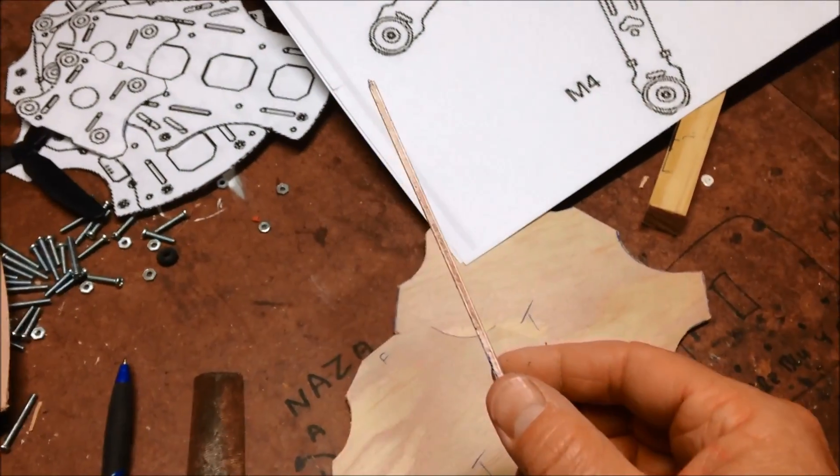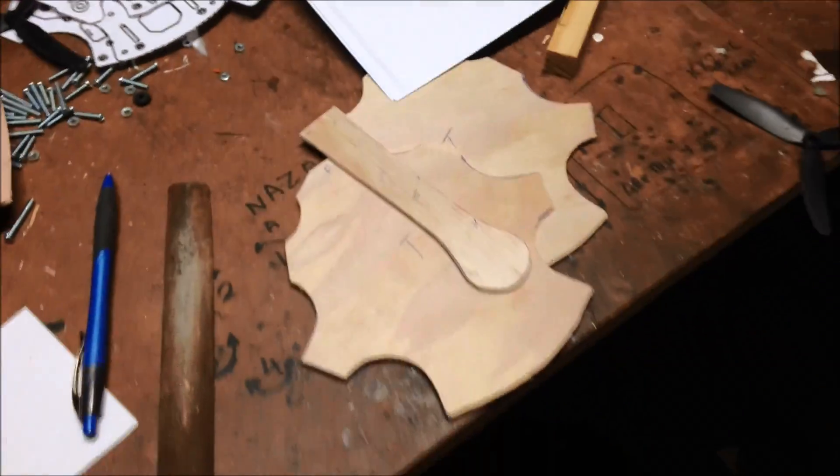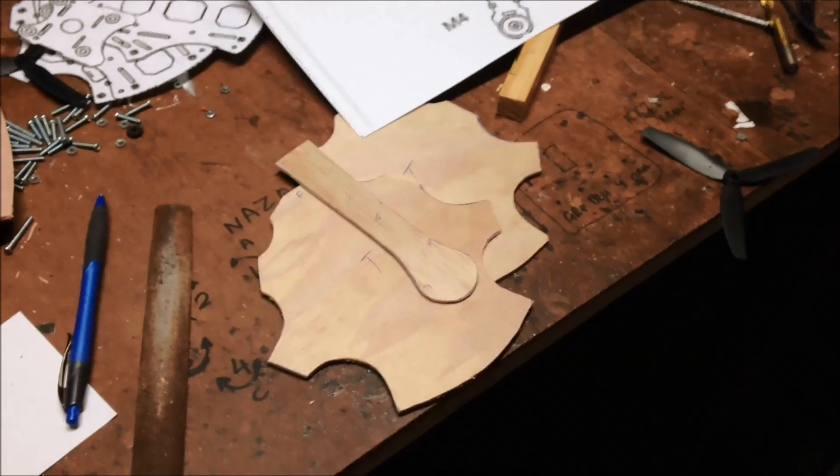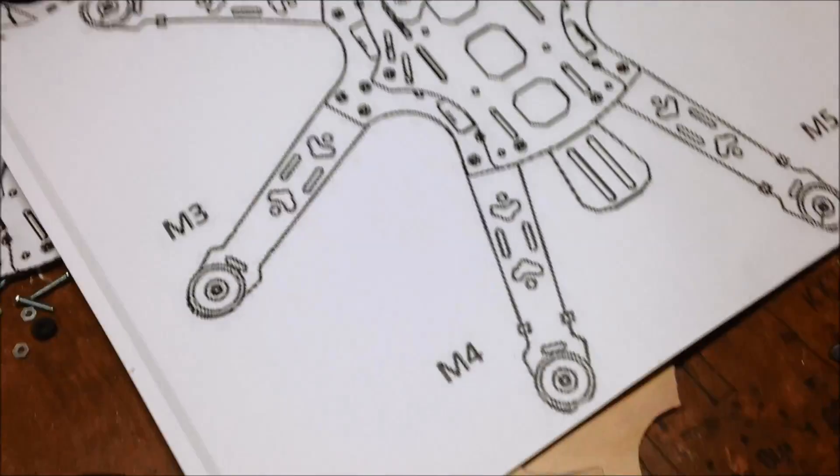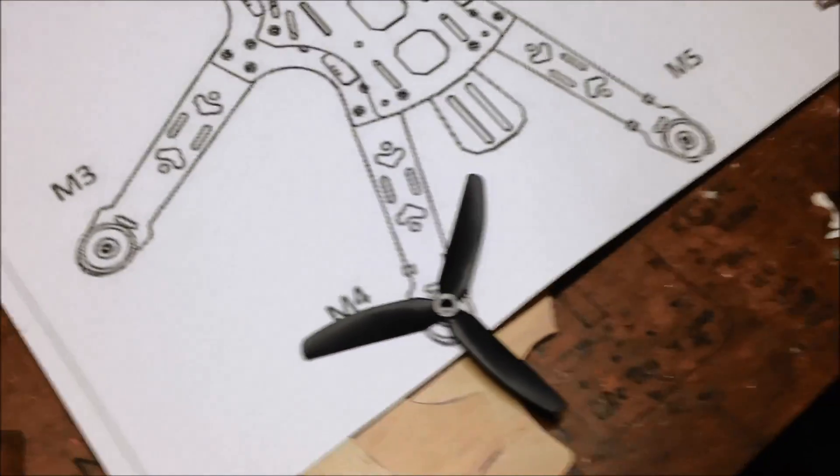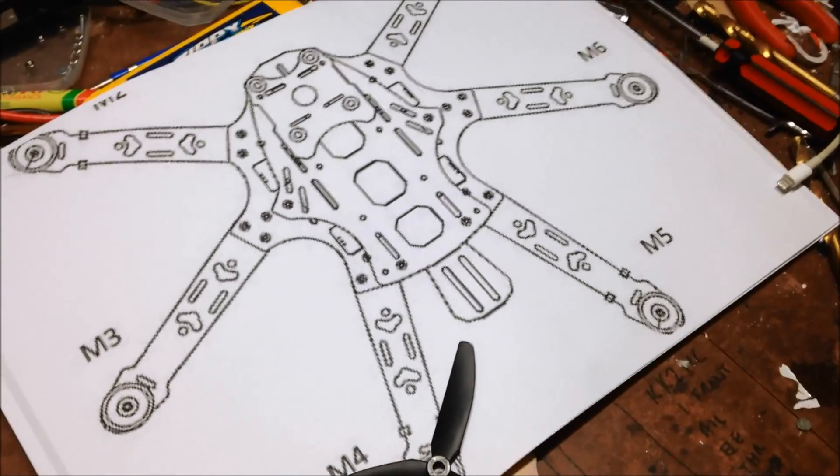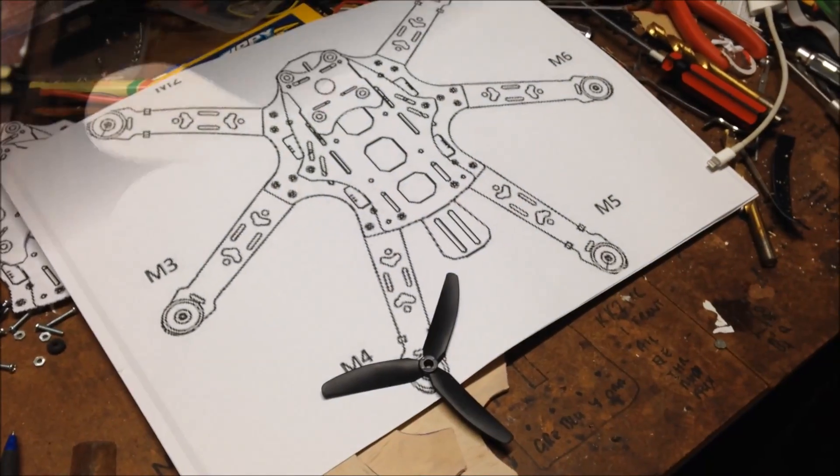I'll make that double width, should be strong enough for the 1806 motors with the 5 inch props. Keep going.